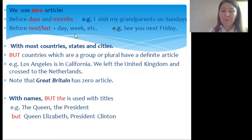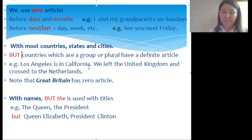We also don't use articles with most countries, states, and cities. But some exceptions: countries which are a group or plural do take the definite article. For example: 'Los Angeles is in California' — no article. But 'We left the United Kingdom and crossed to the Netherlands' — we use the definite article before 'United Kingdom' because it's a group of kingdoms, and before 'Netherlands' because it is plural.